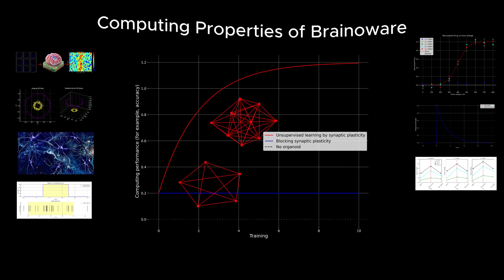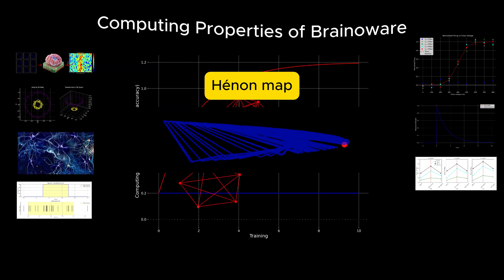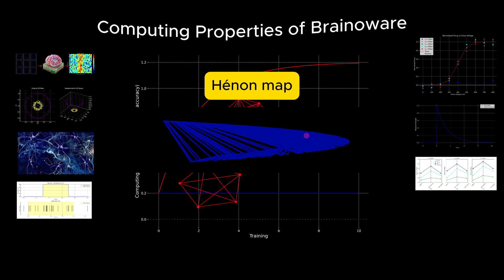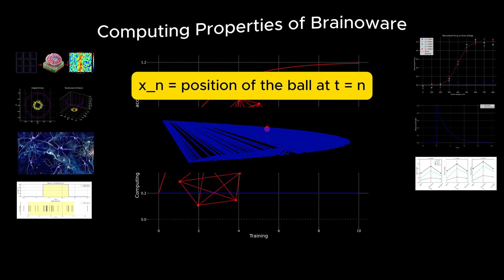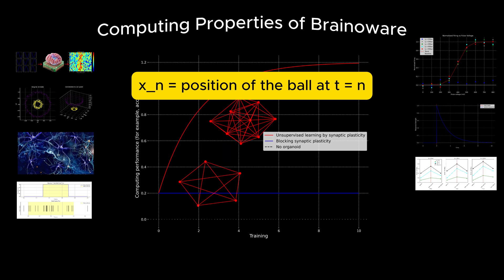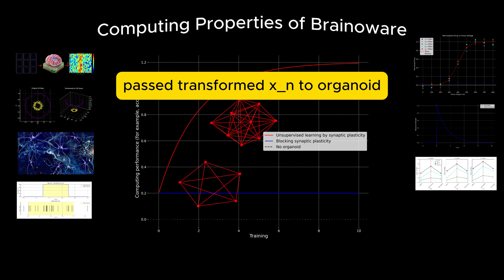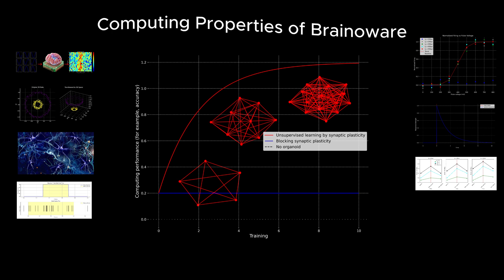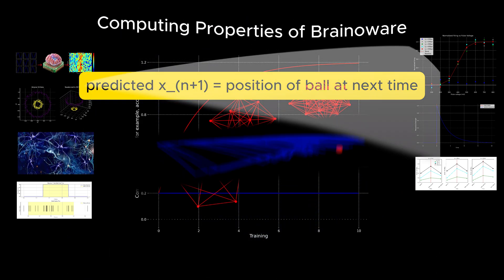The researchers also tested BrainAware's ability to predict a non-linear chaotic system using the Hénon map, a mathematical model known for its sensitivity to initial conditions and complex behavior. Input values X_N were encoded as spatiotemporal sequences of electrical stimulation pulses and applied to the organoid via the multi-electrode array. The organoid's neuronal activity was recorded and passed through a linear regression function to predict the next value X_N+1.